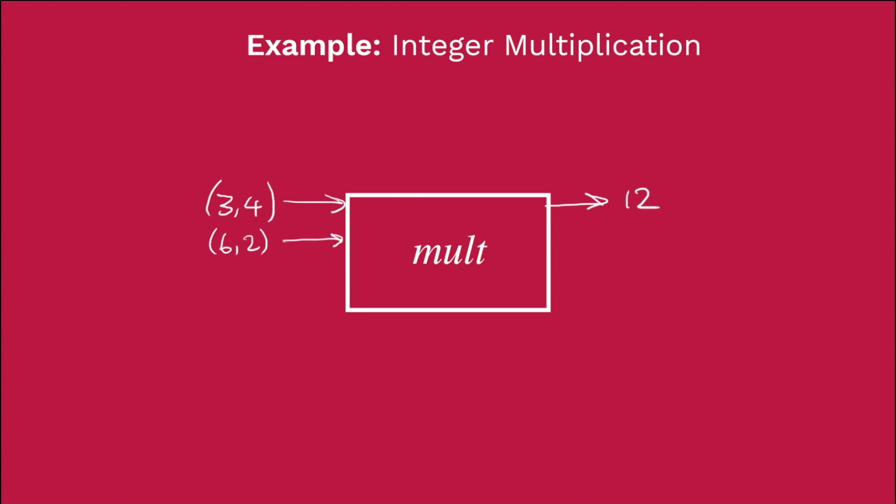I'll give it 6, 2 and our multiplier is going to give us back 12. Or I could give it 0, 5 and it will give us back 0. So what's going on here, we're giving our multiplier pairs of integers and it's giving us back integers.